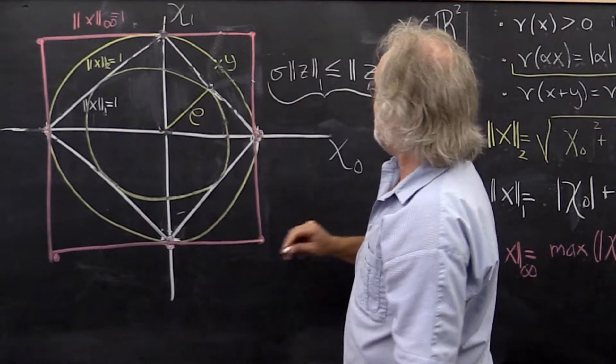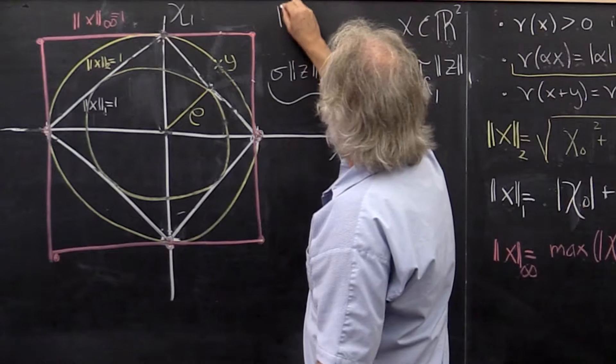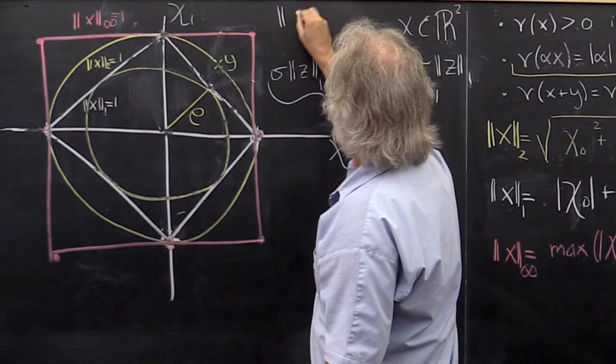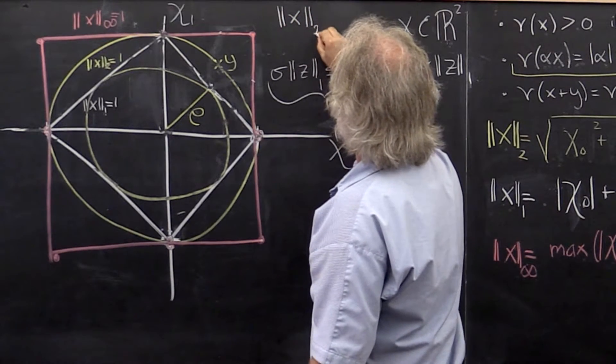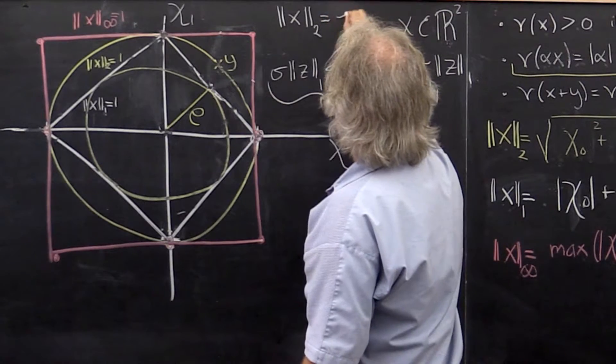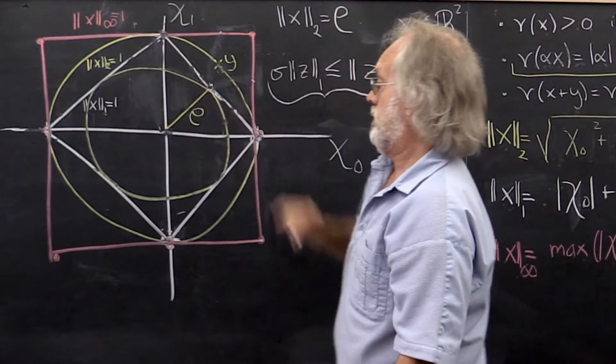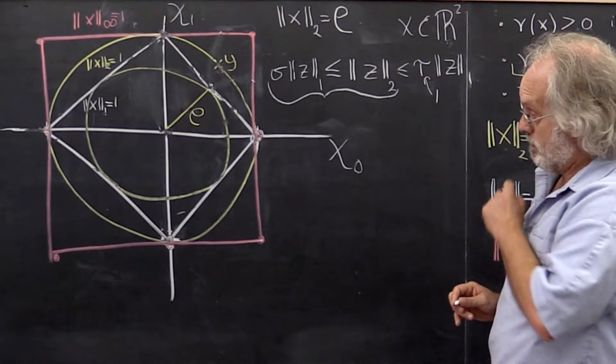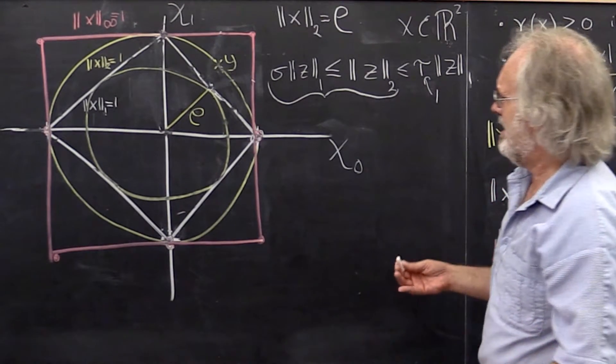And notice that that's the set of all vectors x such that the 2-norm of x is equal to the radius of this ball. What is that radius anyway?